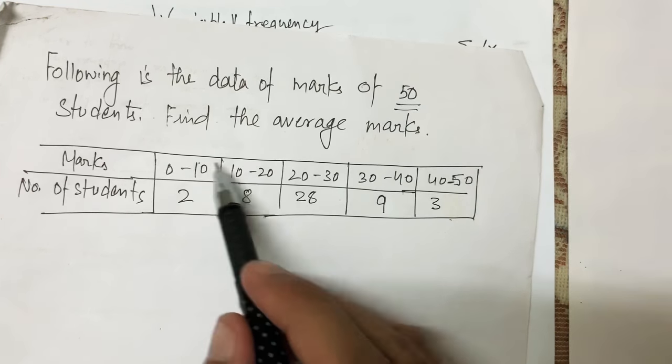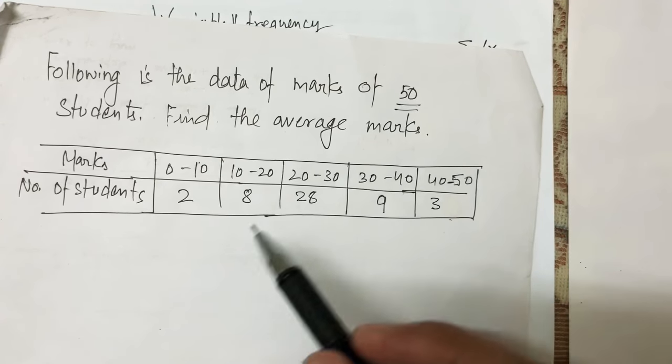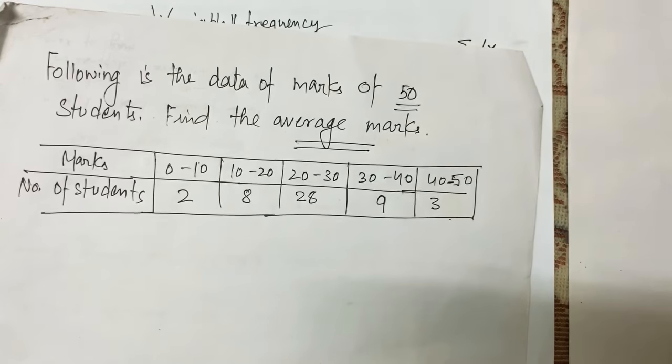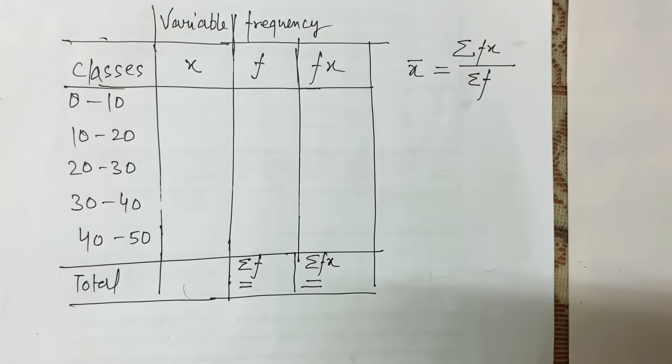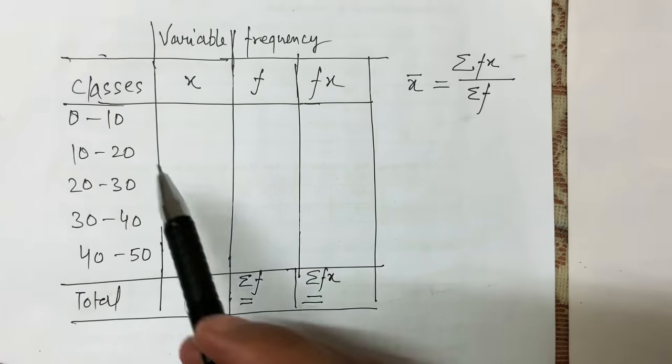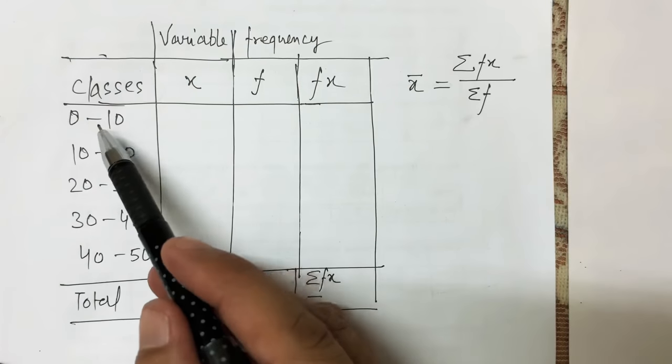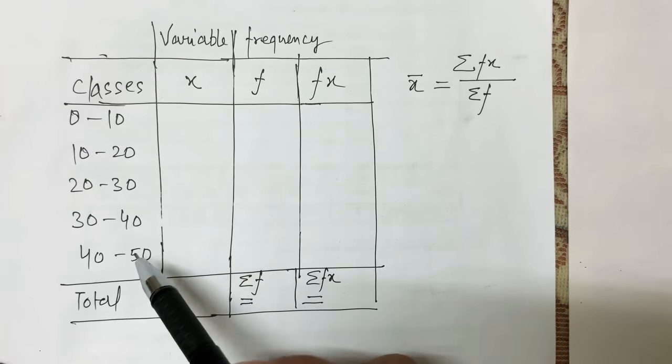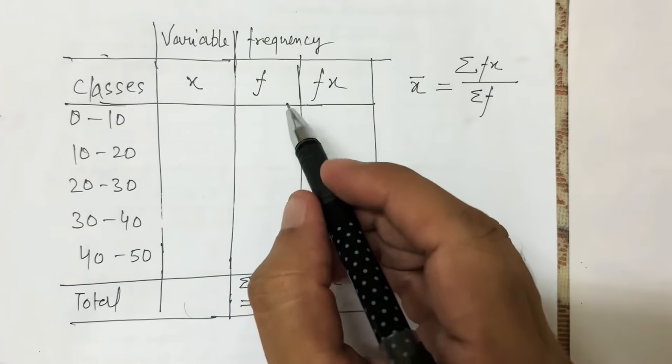I have written the question in tabular format with classes of marks: 0 to 10, 10 to 20, 20 to 30, 30 to 40, 40 to 50.